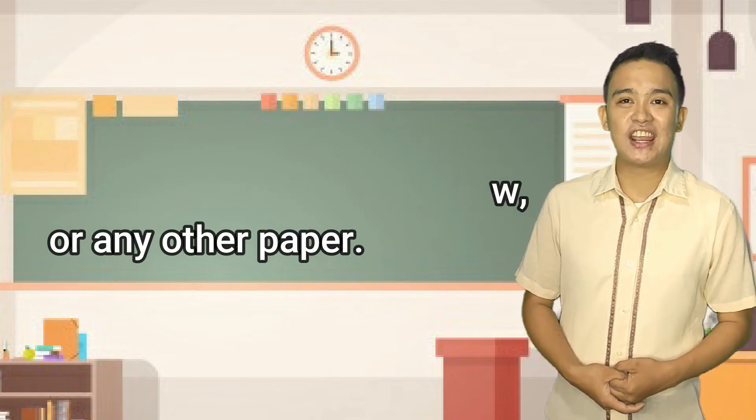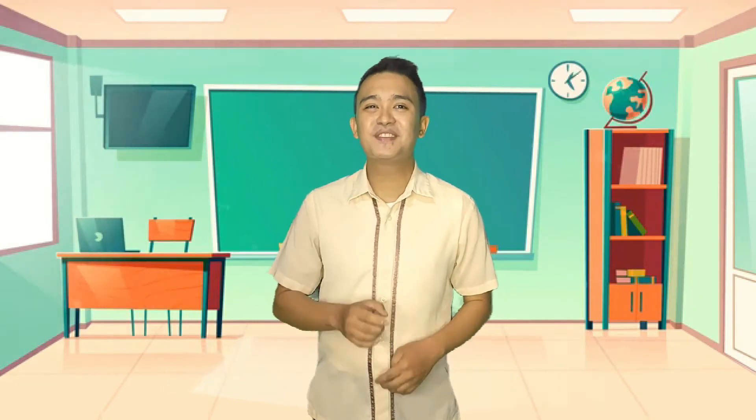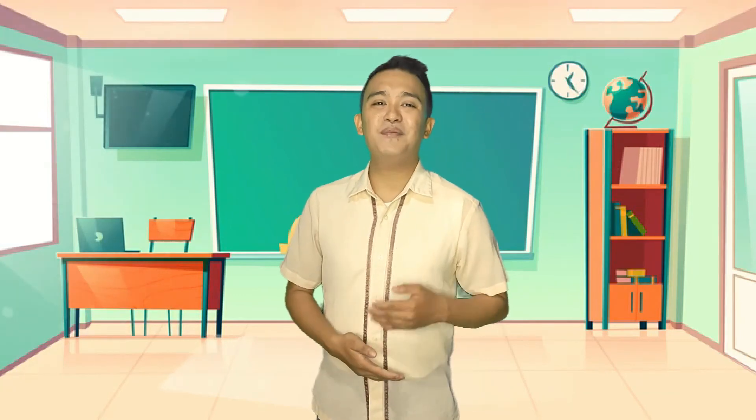So that's the wrap for today. We learned that synthesizing means combining research literature into one. We also enumerated the steps in synthesizing information, which are organizing your sources, outlining your structure, writing paragraphs with topic sentences, then revising, editing, and proofreading.